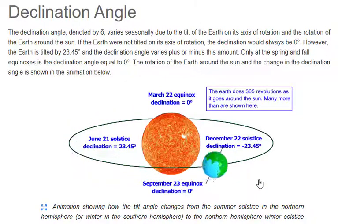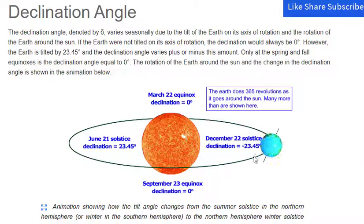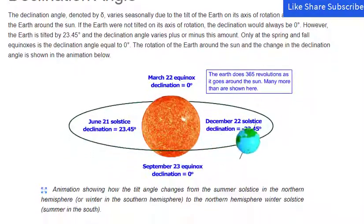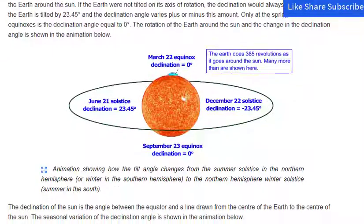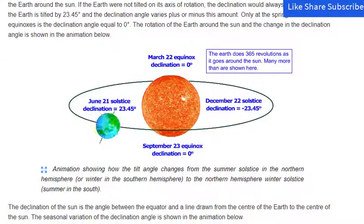The declination angle, denoted by delta, varies seasonally due to the tilt of the earth on its axis of rotation and the rotation of the earth around the sun. If the earth were not tilted on its axis of rotation, the declination would always be zero degrees. However, the earth is tilted by 23.45 degrees and the declination angle varies plus or minus this amount.